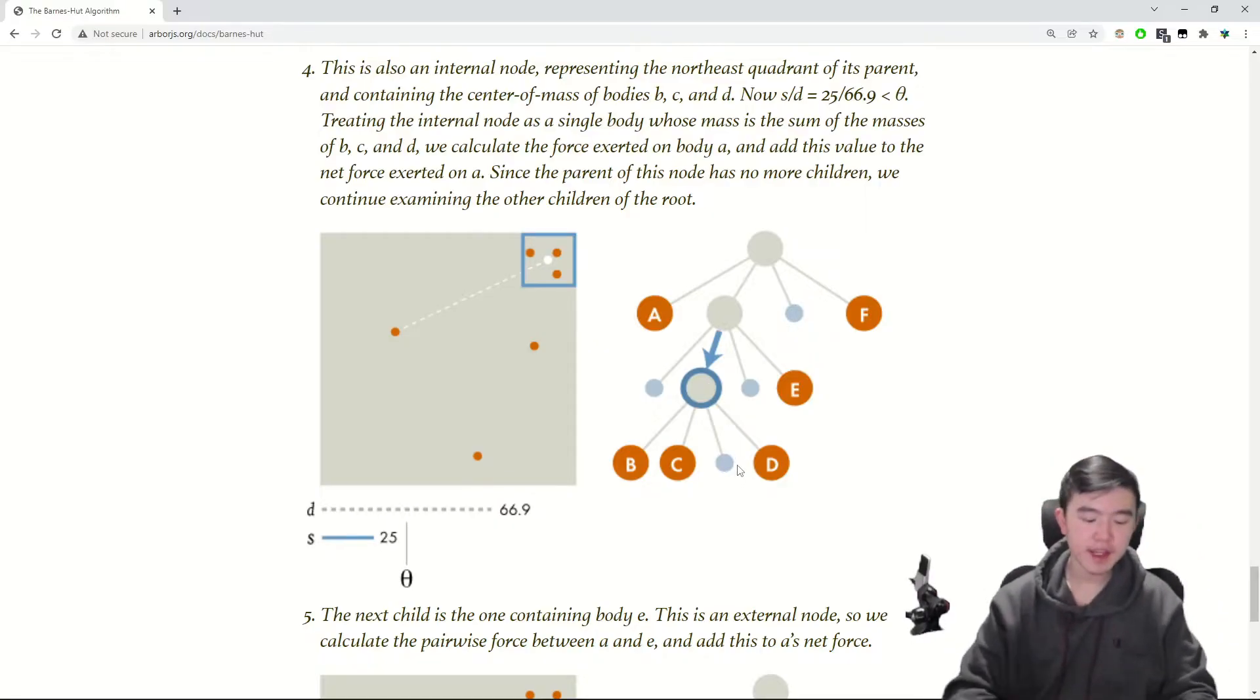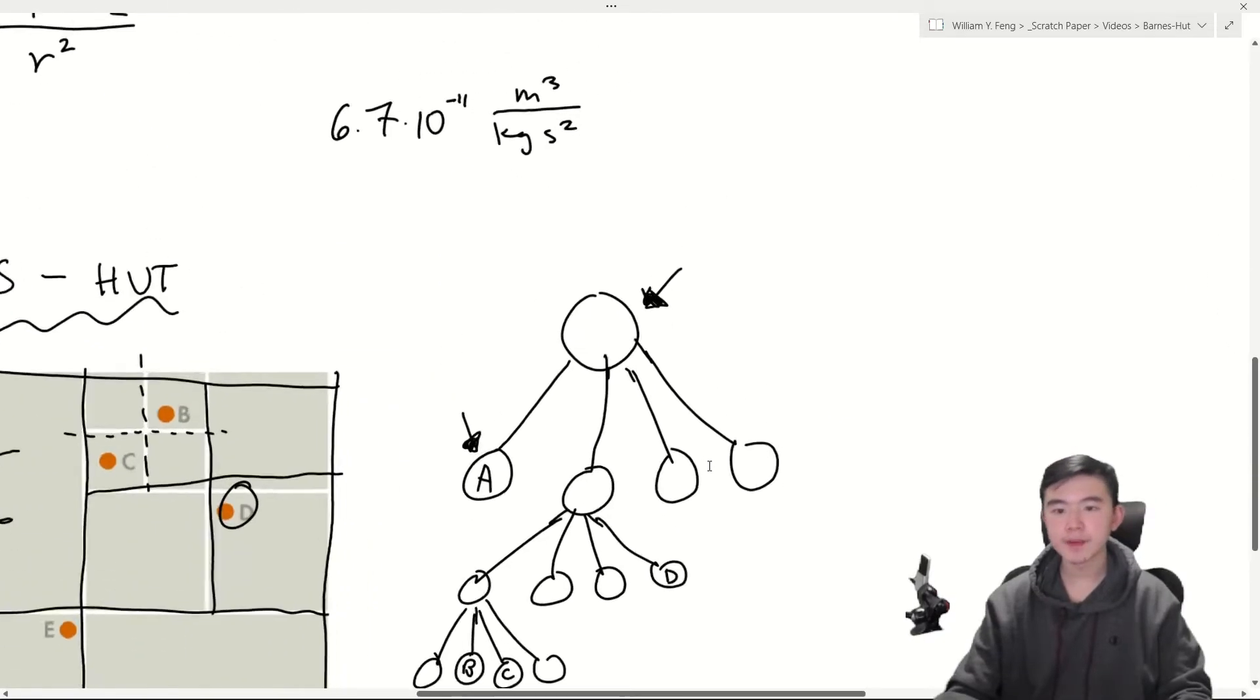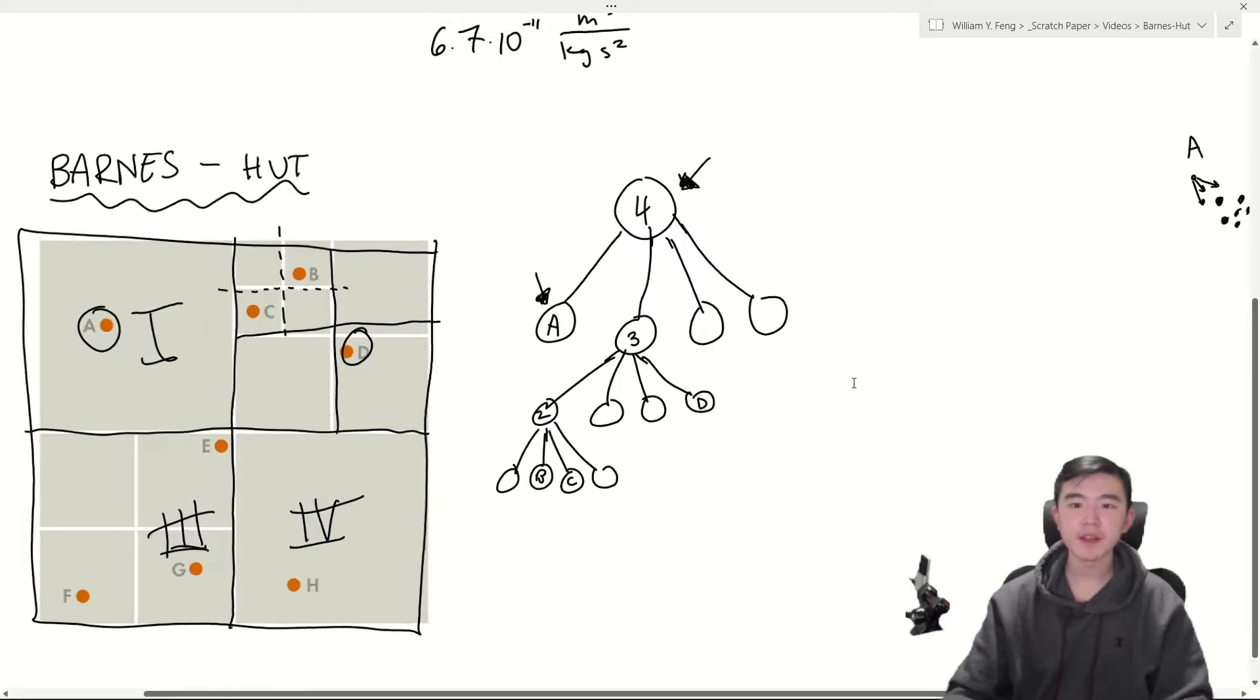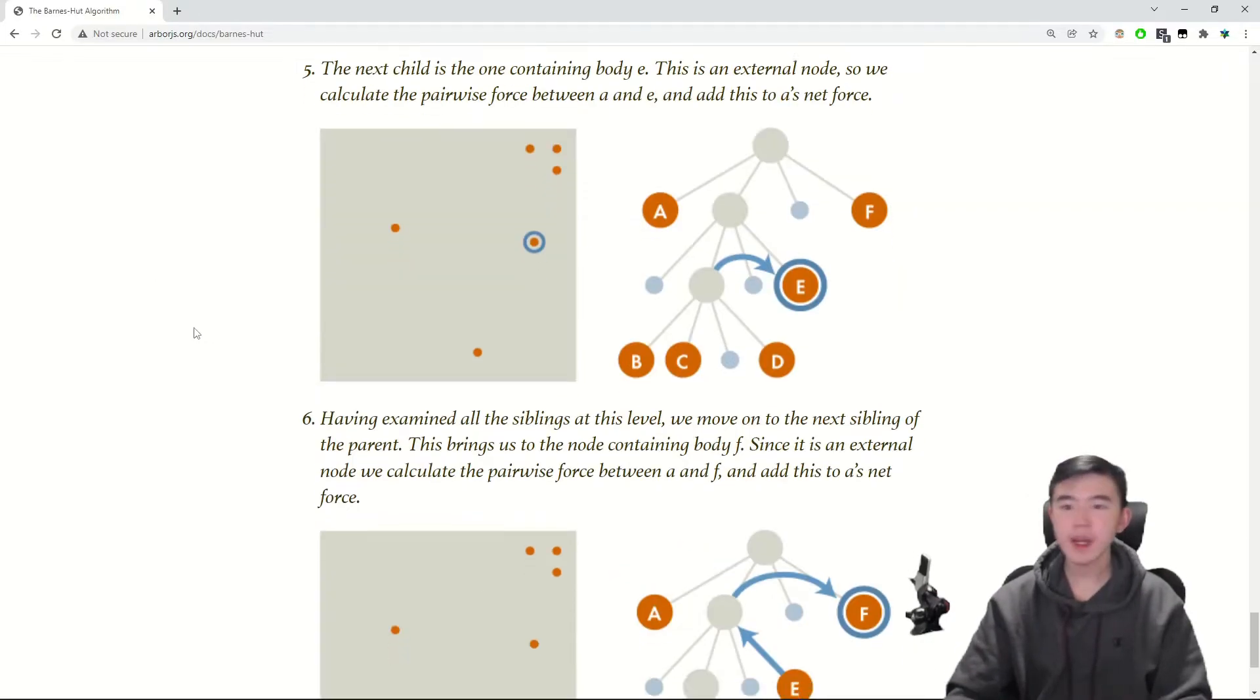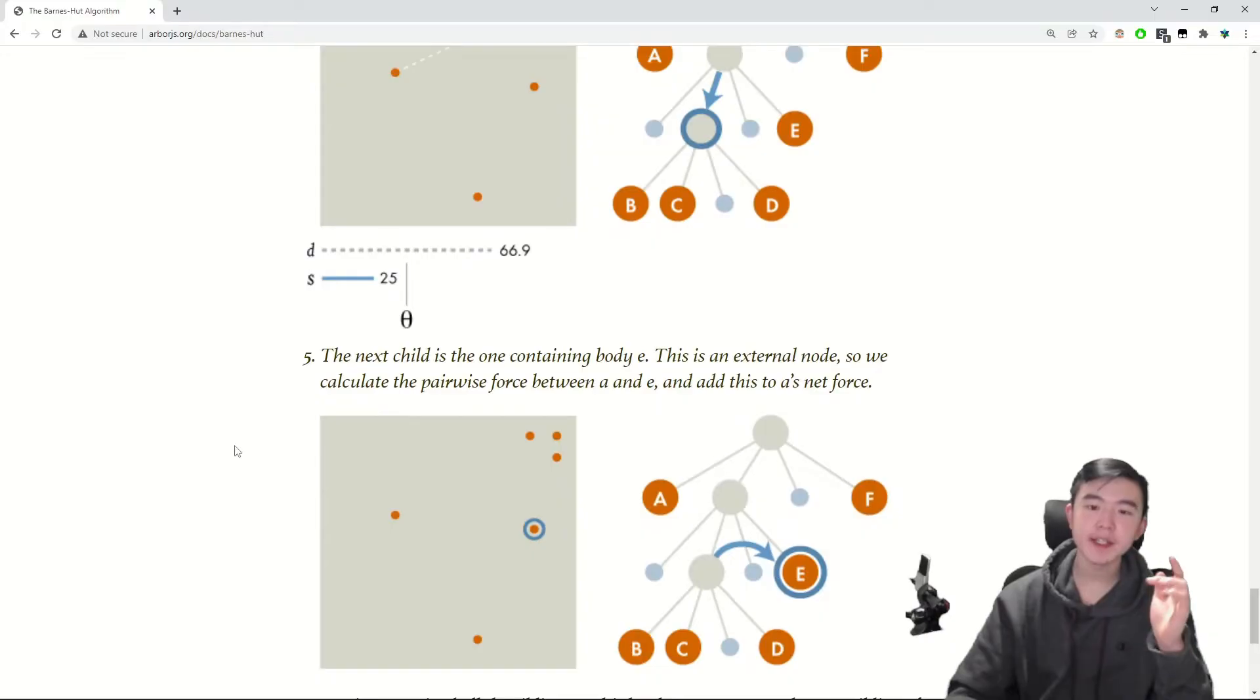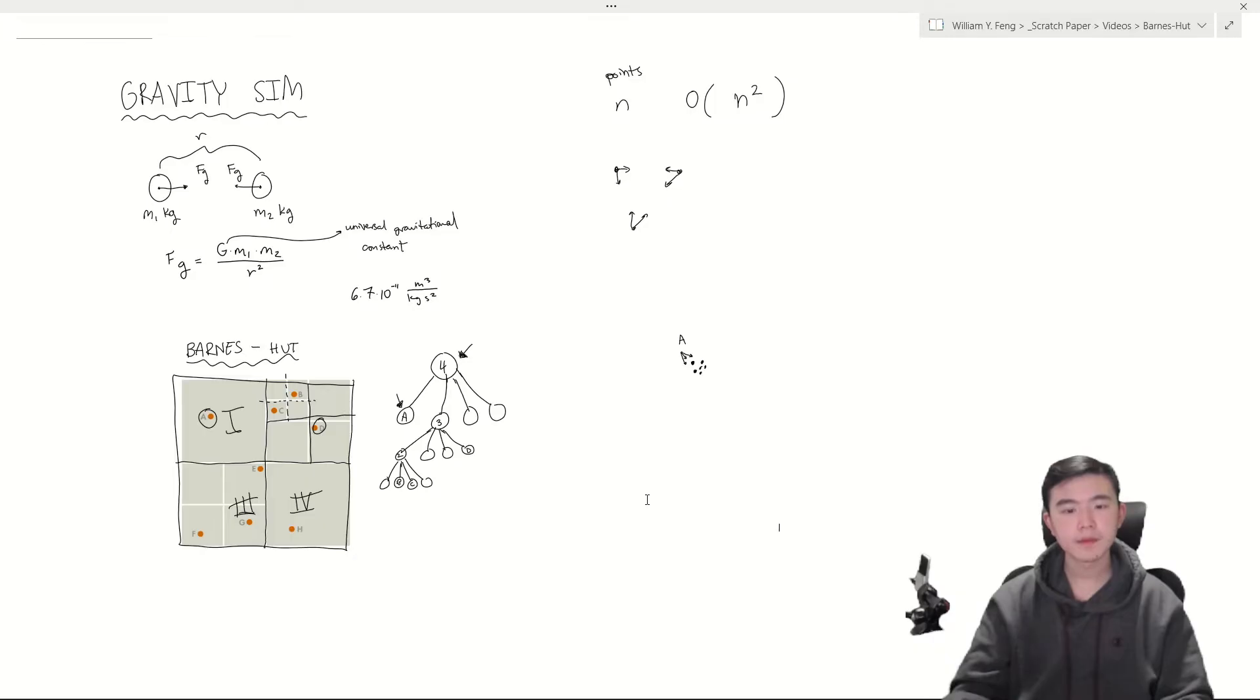Now this is where the keeping track of the center of mass and total mass of every node is important. So when we're grouping objects together as a single node, we need to know the total mass and center of mass to do the gravity calculation. And this is important to keep track of actually, as we're doing it, we don't want to be computing this on the fly. That's going to be way too slow. Anyways. For the node A, we traverse through the entire tree, calculating all the gravitational forces on A by those other nodes grouping together bodies if necessary. That was a lot.